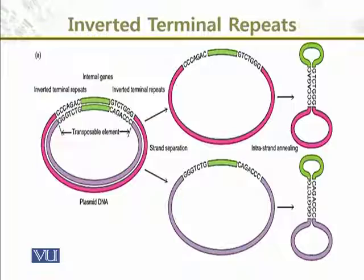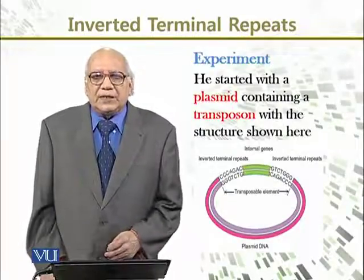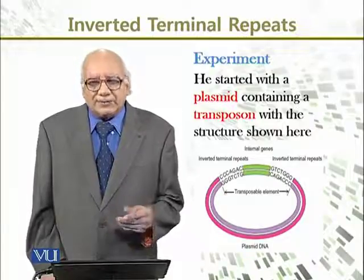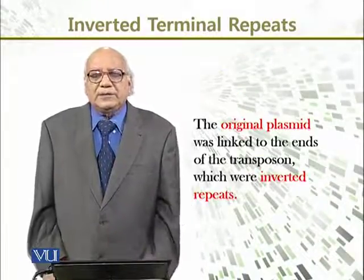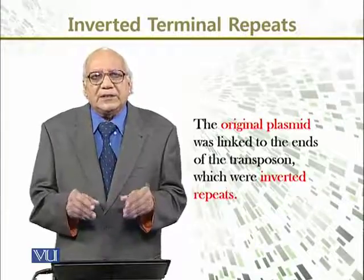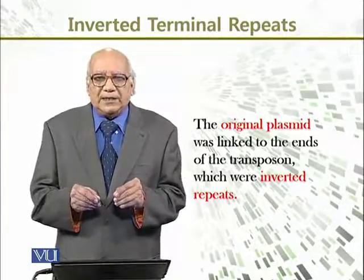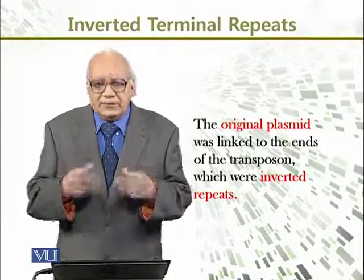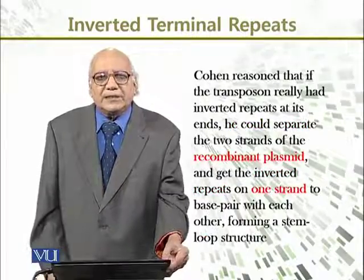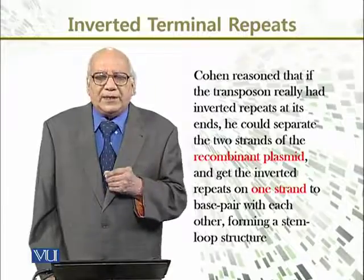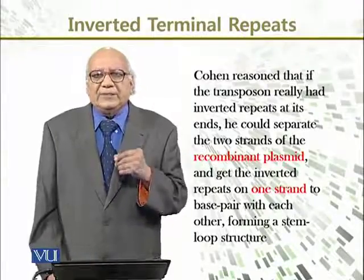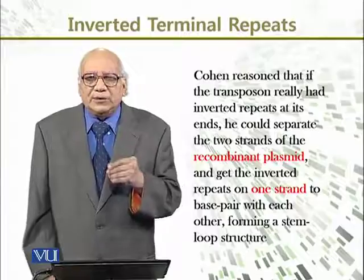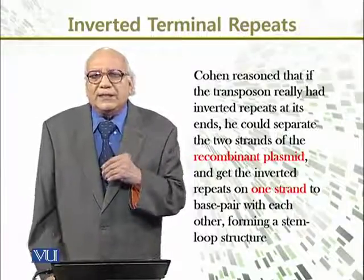He started with a plasmid containing a transposon with the structure shown here, as we have seen in the previous slides. The original plasmid was linked to the ends of the transposon, which were inverted repeats. These inverted repeats were discovered, and after this finding, Dr. Cohen reasoned that if the transposon really had inverted repeats at its ends, he could separate the two strands of the recombinant plasmid.